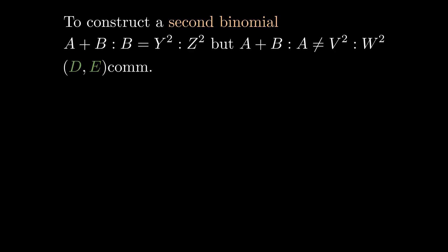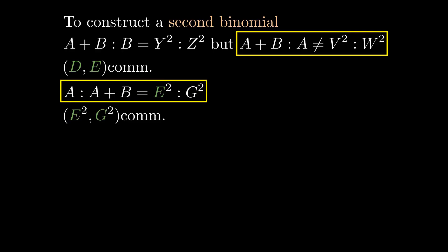Let D be rational and D and E commensurable so that E is rational. Let A to A plus B be proportional to E squared to G squared. A to A plus B is a ratio of whole numbers, so A and A plus B are commensurable, so E squared and G squared are commensurable. A to A plus B is not a ratio of whole square numbers, so neither is E squared to G squared.